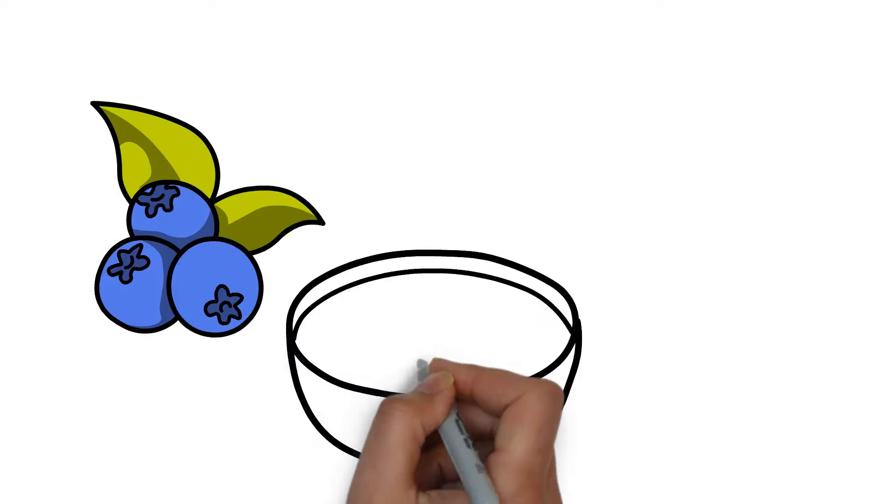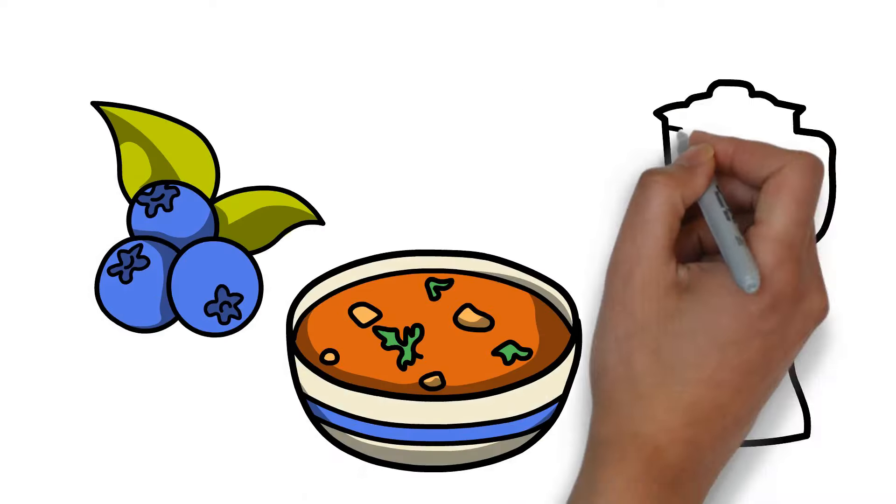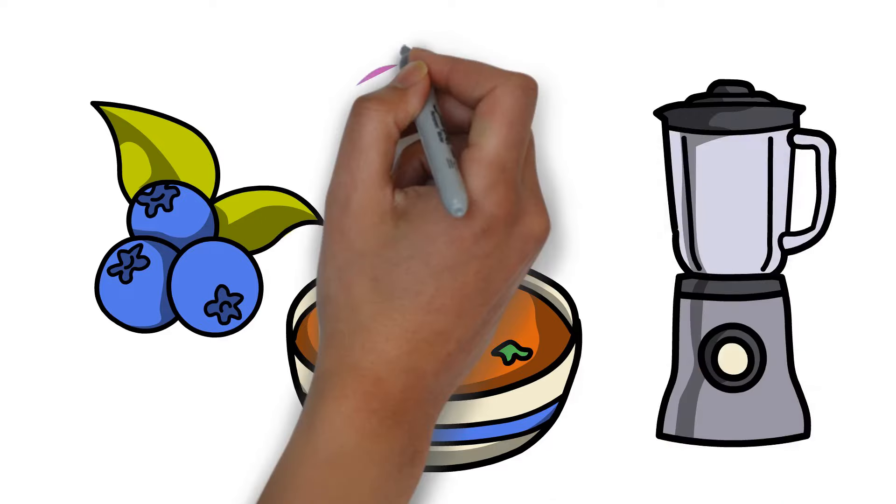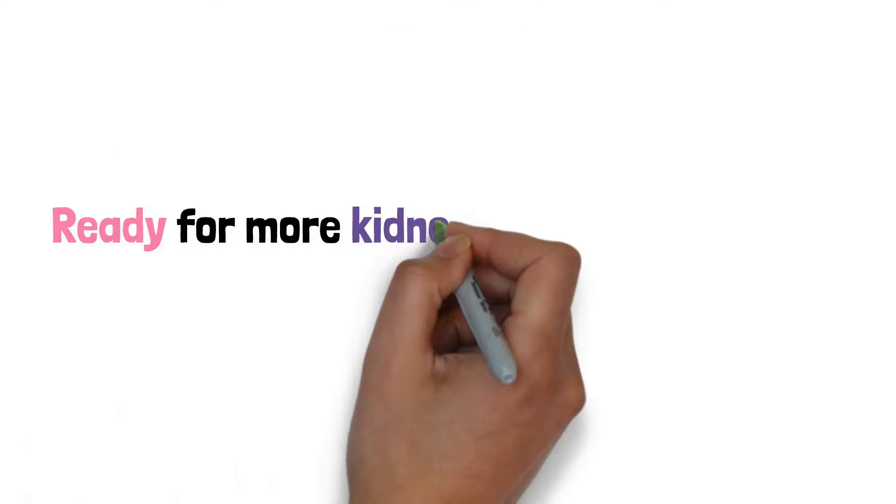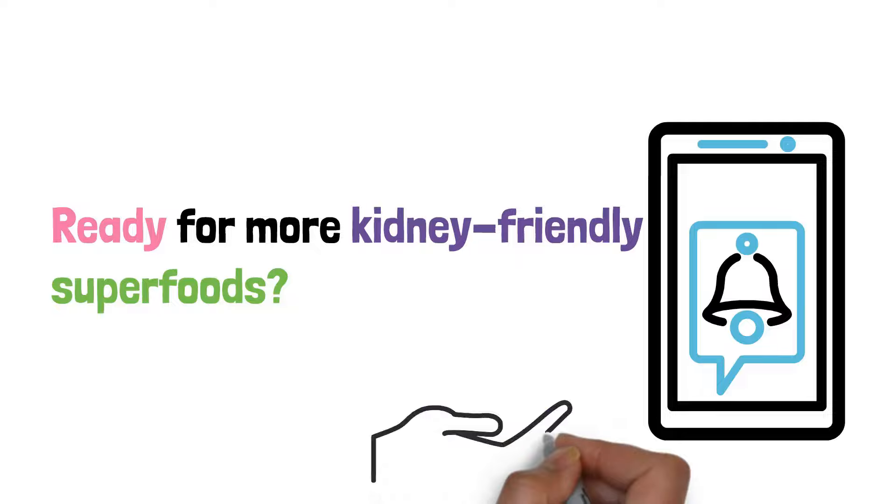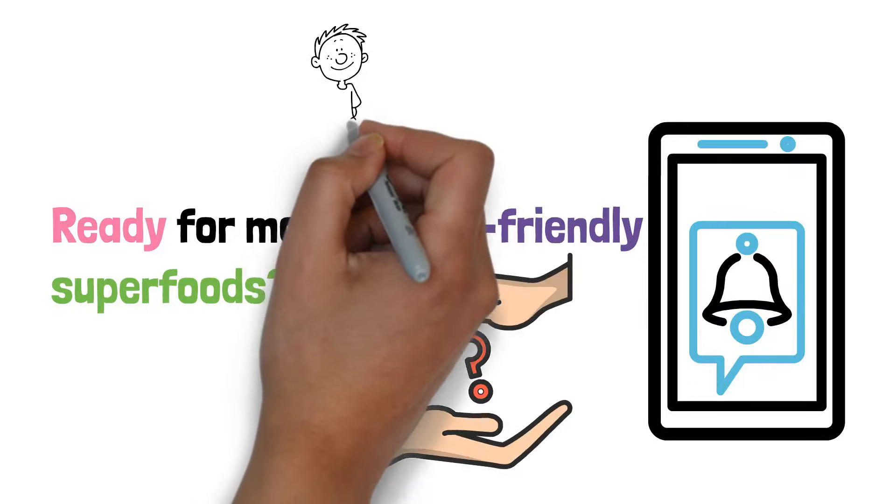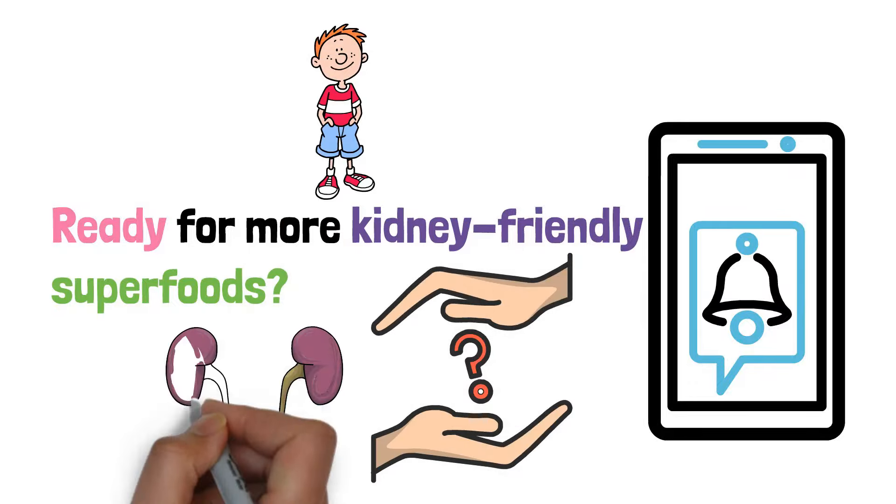By fighting off oxidative stress and inflammation, blueberries help keep your kidneys functioning efficiently. Snacking on blueberries, adding them to your morning oatmeal, or blending them into a smoothie are delicious ways to boost your kidney health. Ready for more kidney friendly superfoods? Stay tuned as we reveal the next fruit that's not only good for your taste buds but also for your kidneys.